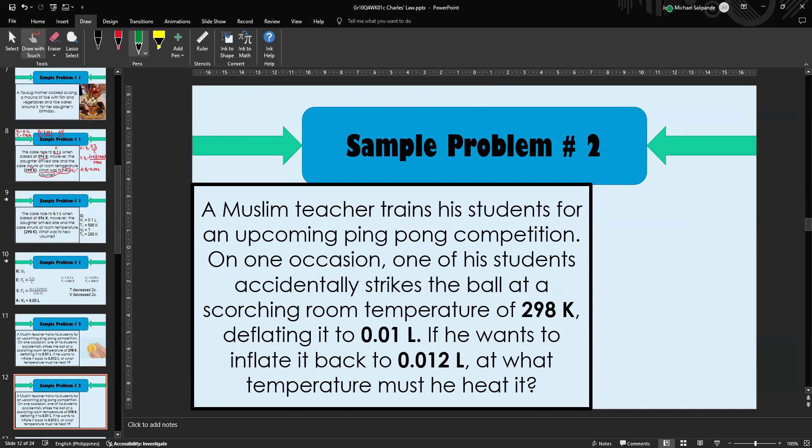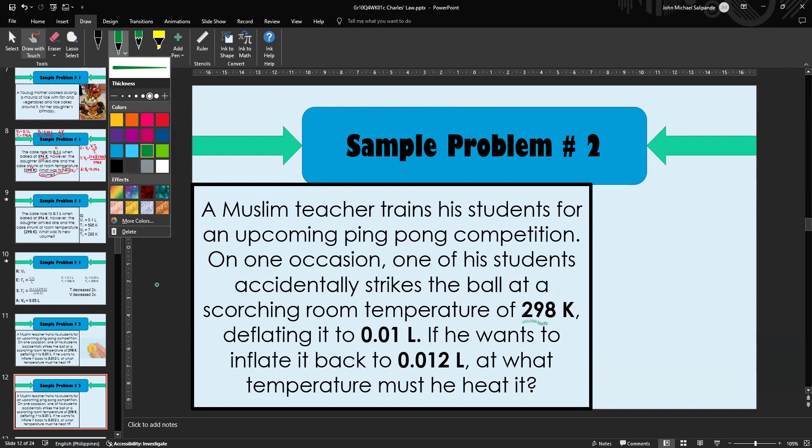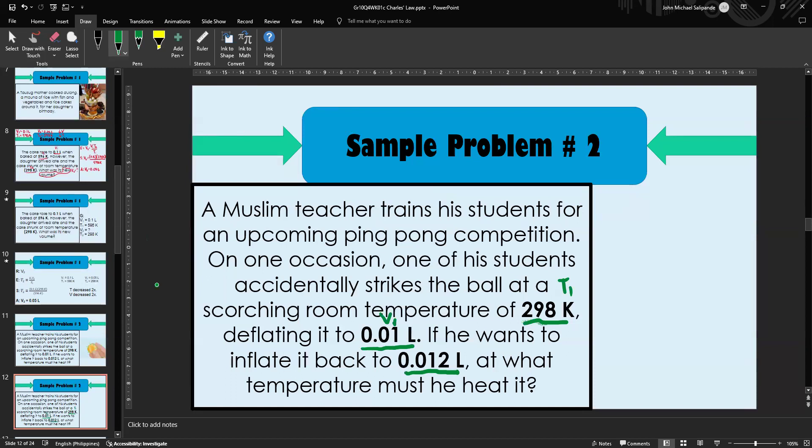Let's label our given values. 298 Kelvin is the first temperature given, this is T₁. 0.01 liter is the first volume given, that's V₁. 0.012 liters is the final volume given, that's V₂. We're being asked for the new temperature, so we need to solve for T₂.